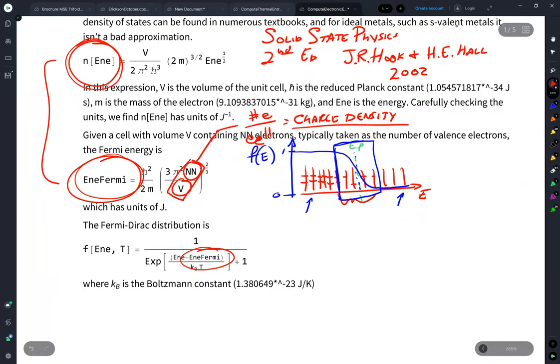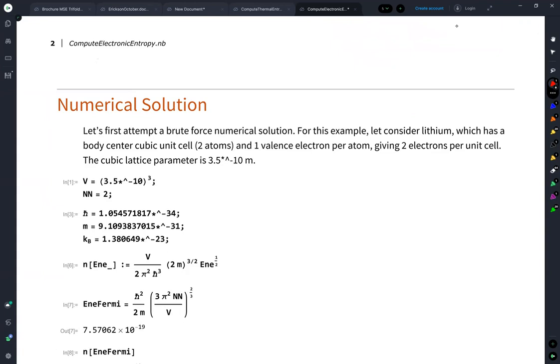And in our example, we're going to be looking at lithium. This is where the density is included, which is really the fundamental contributing factor to the free electron model. So for this example, I decided to look at lithium because it's a nice ideal metal that is well behaved. Lithium is body center cubic, so it has two atoms in a unit cell, one valence electron per atom. And I just took the experimental cubic lattice parameter to be around 3.5 angstrom.